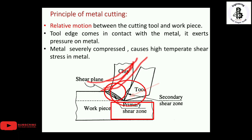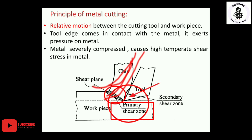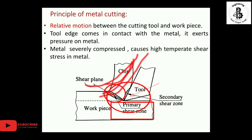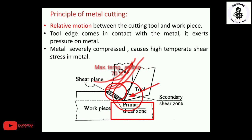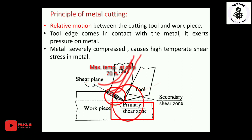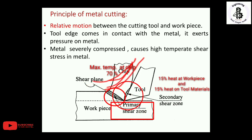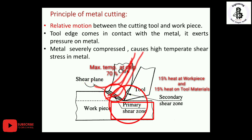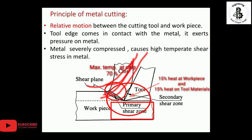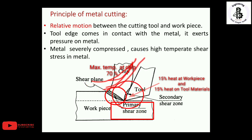Regarding temperature on the different components of the metal cutting process: by the application of cutting force and contact of the tool and workpiece, the maximum heat is carried away through the chip. Approximately 70 percent of the heat is taken away by the chip, 15 percent is carried by the tool, and the remaining 15 percent is carried by the workpiece. In most cases when you observe cutting on any machine, the chip will be heated.